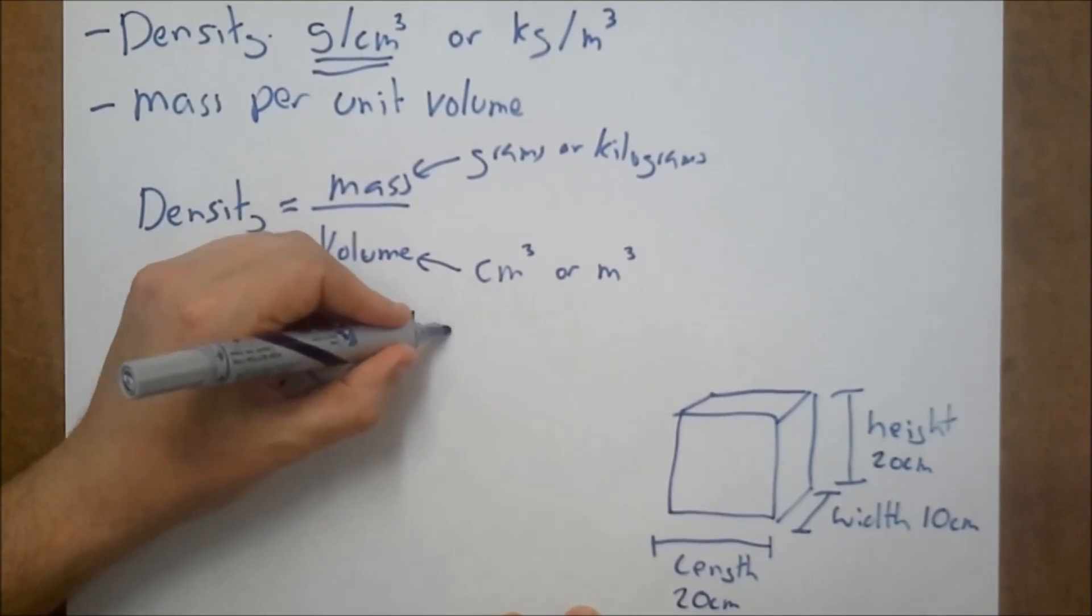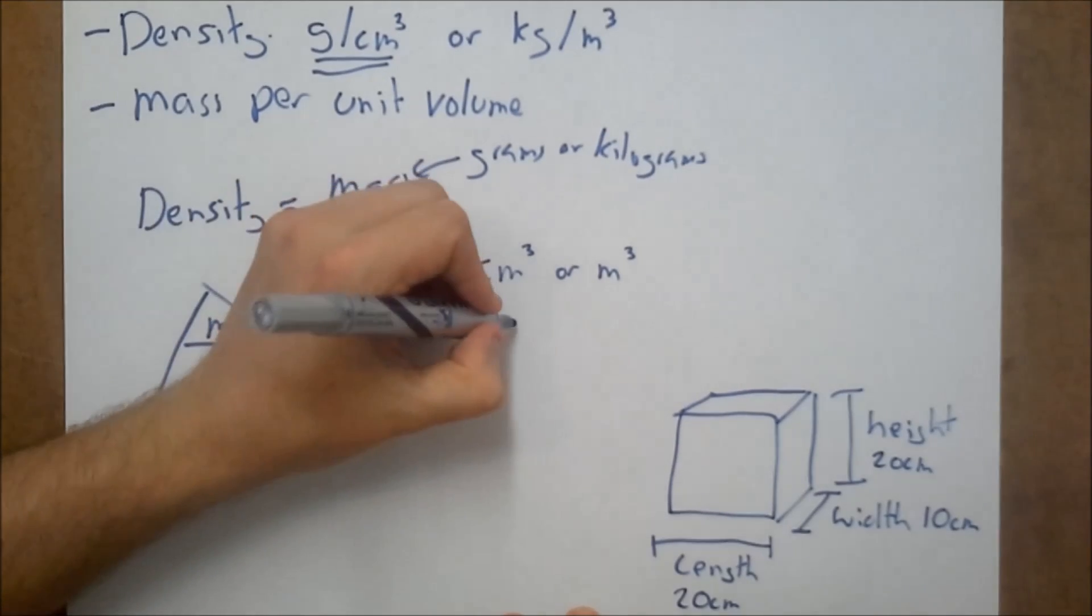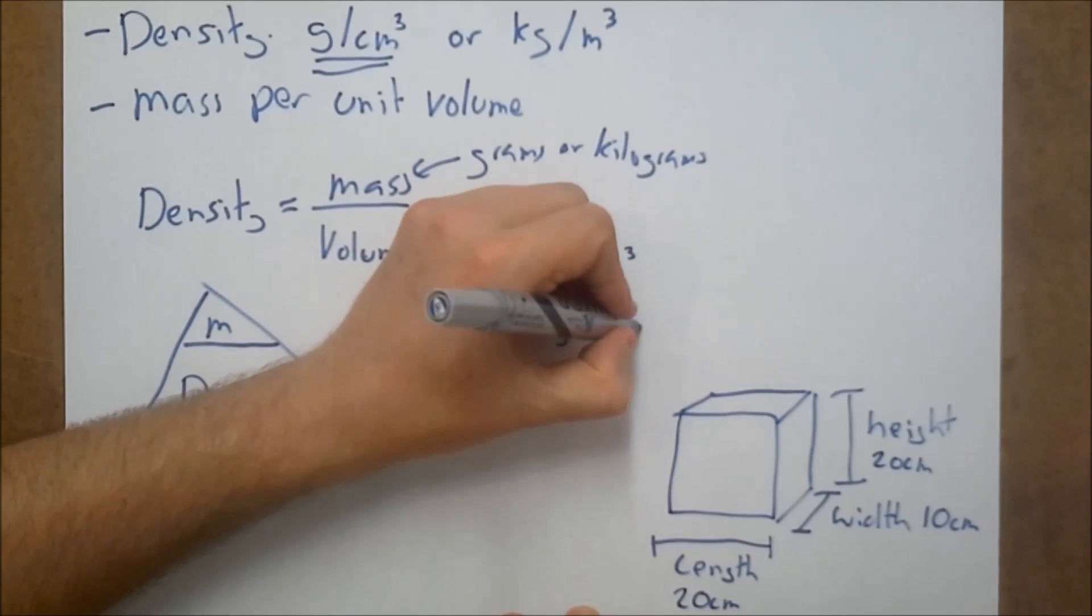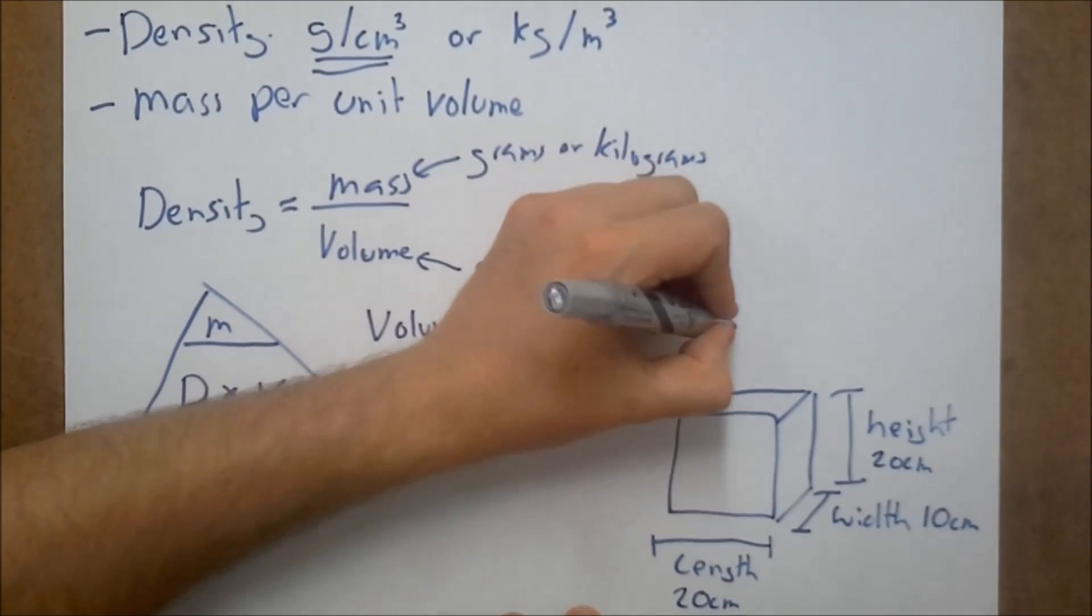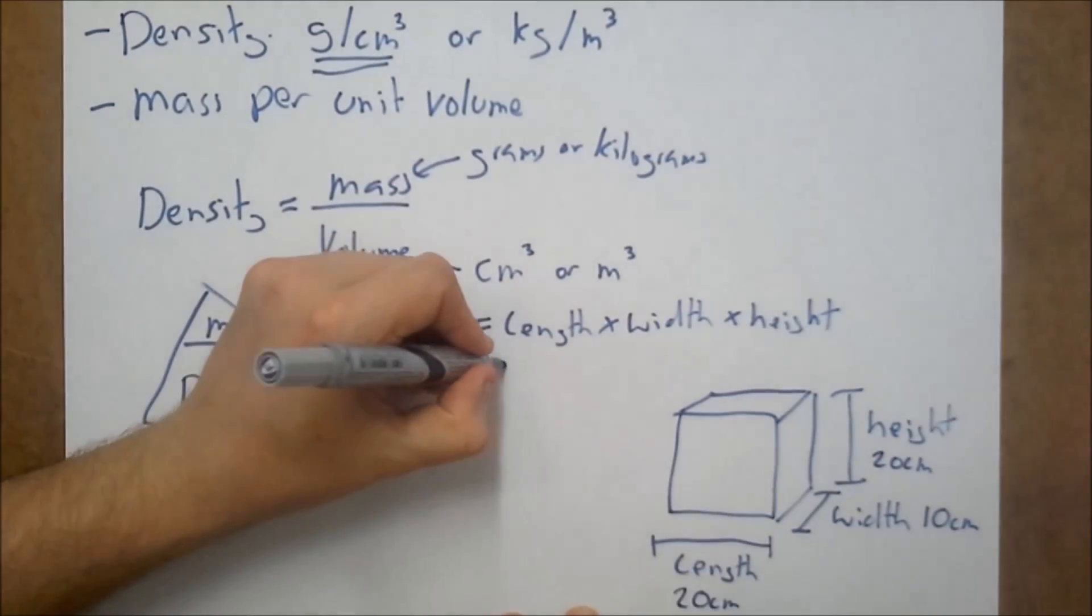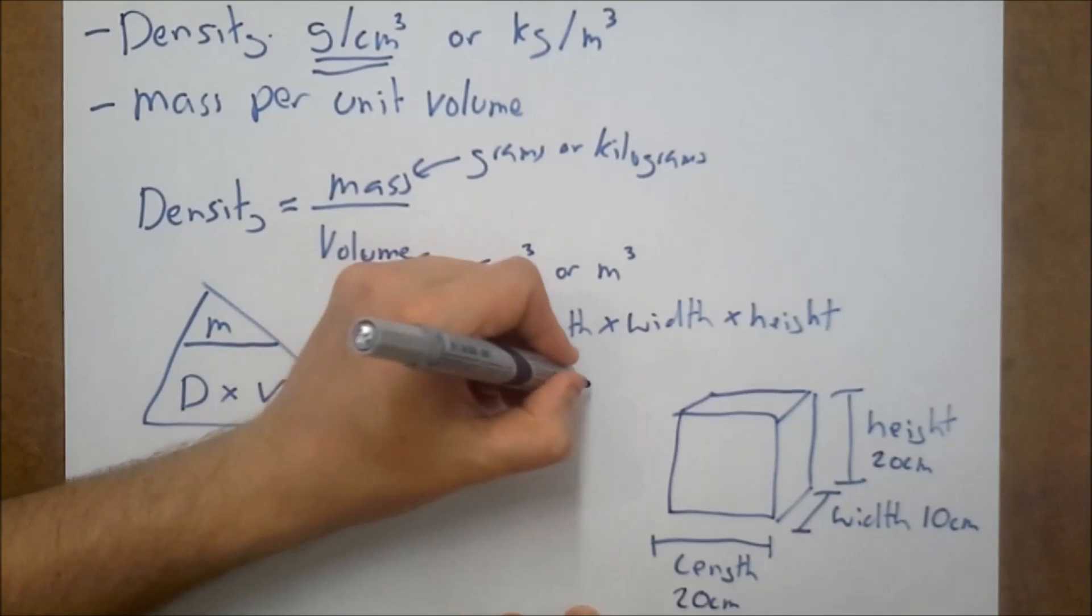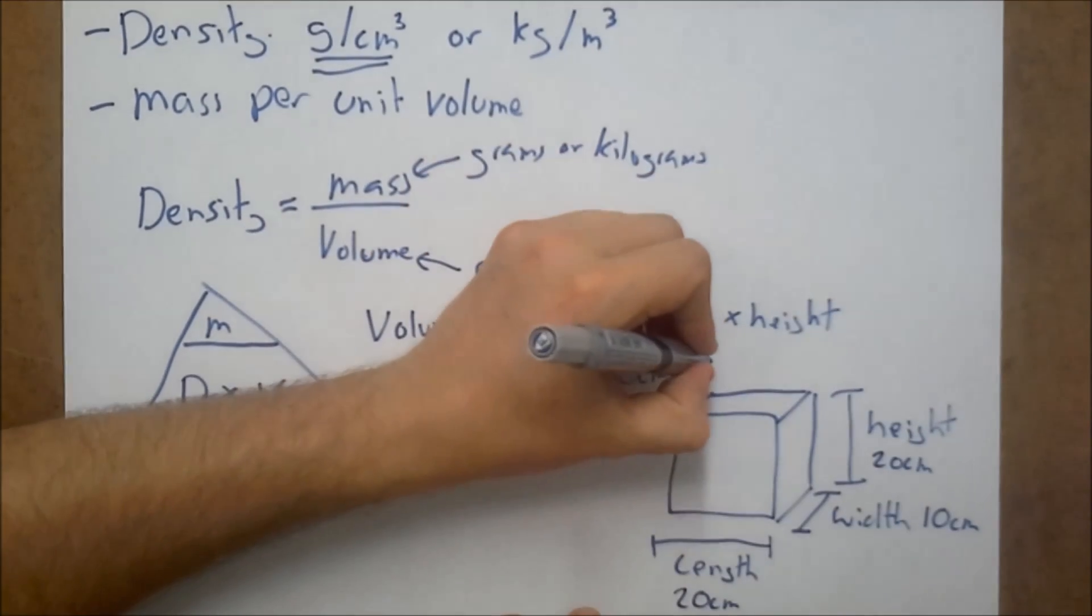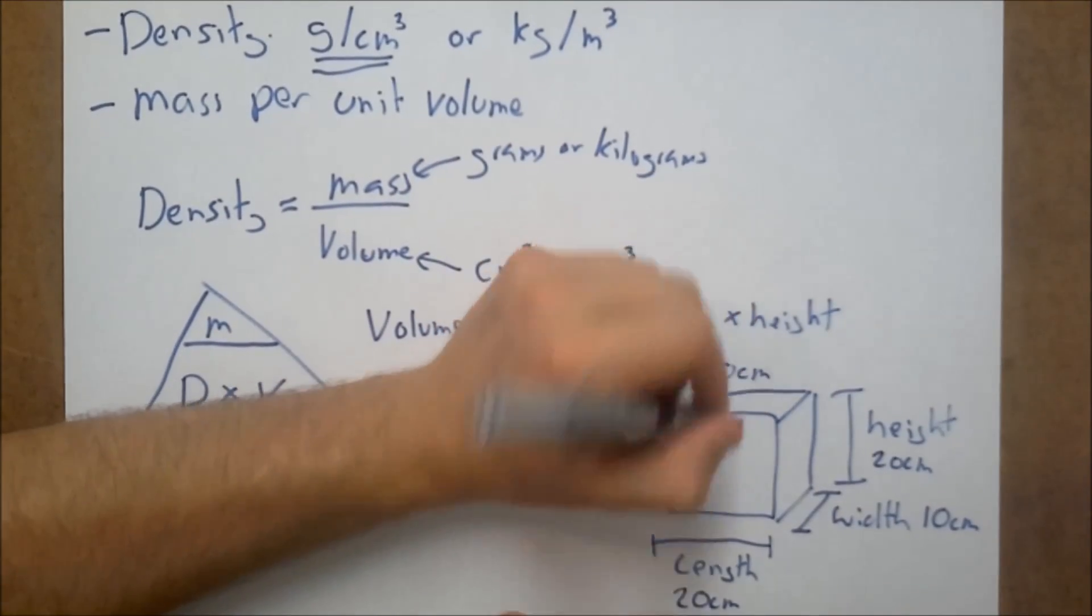Now the first thing we need to do is find out what's the volume of this object. So volume is equal to the length times the width times the height. In this case, our length is 20 centimeters. Our width is 10 centimeters. And then finally, our height is 20 centimeters.